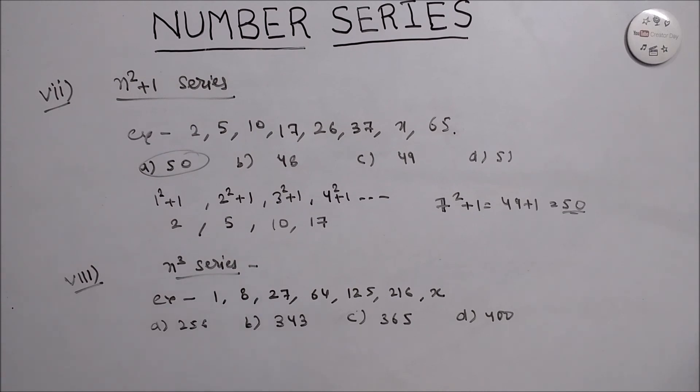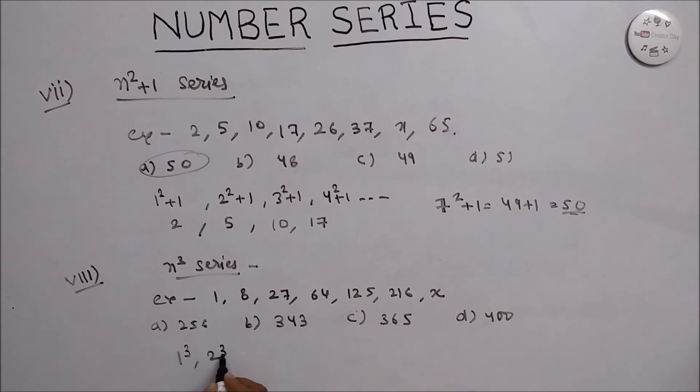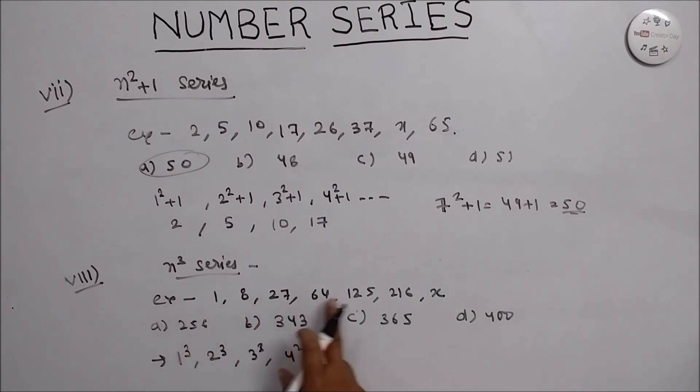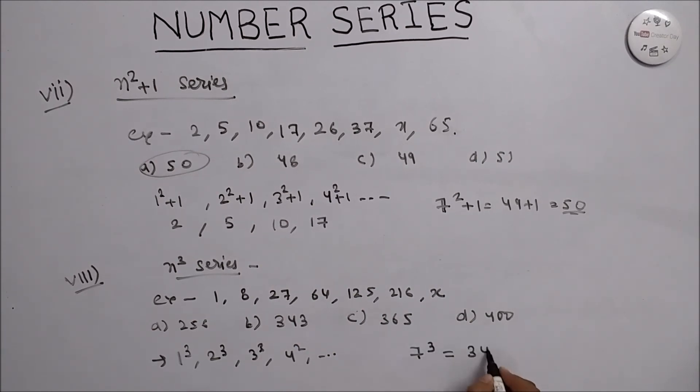As the series says, that is n cube series, so this series follows this rule by this way: 1 cube, 2 cube, 3 cube, 4 cube, and so on. If we have to calculate the value of x, we just start from counting this. Let's see: 1, 2, 3, 4, 5, 6, 7. So we can directly put 7 cube, what we get answer is 343.